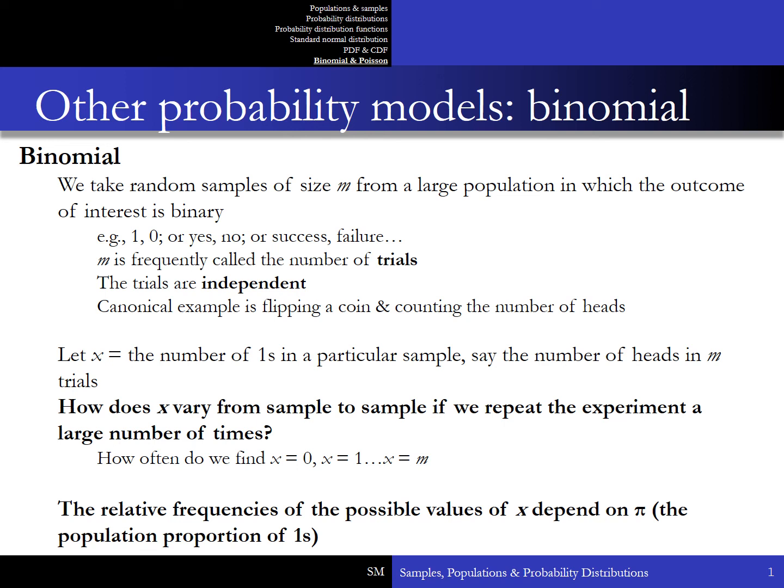We're going to look at another probability distribution. This is a distribution for a discrete outcome — in fact, a binary discrete outcome. We'll call it the binomial. The setup for the binomial is as follows: we take random samples of a particular size, let's call that size M, from a large population in which the outcome of interest is binary. In other words, you can either get a one or a zero, yes or no, success or failure, and so on.